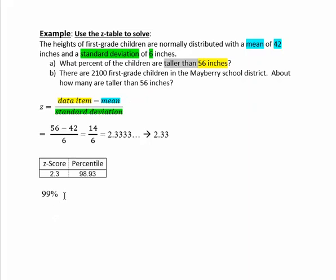So in this case, 99% is not the answer we're looking for. We need to subtract from 100% to get the answer that they're asking us for. And that is our answer to part A. The percent of children taller than 56 inches is 1%.